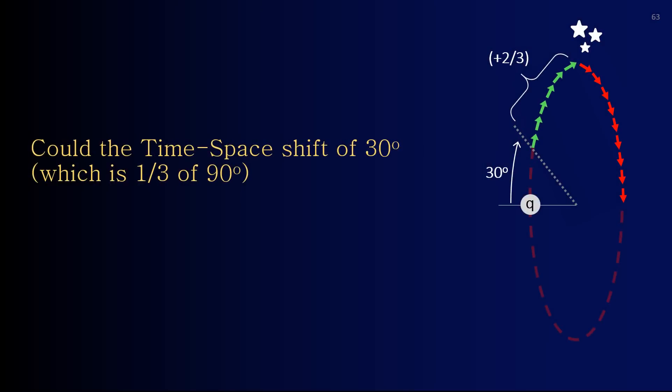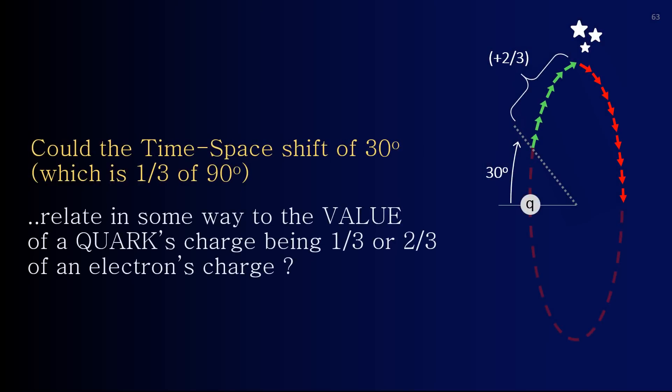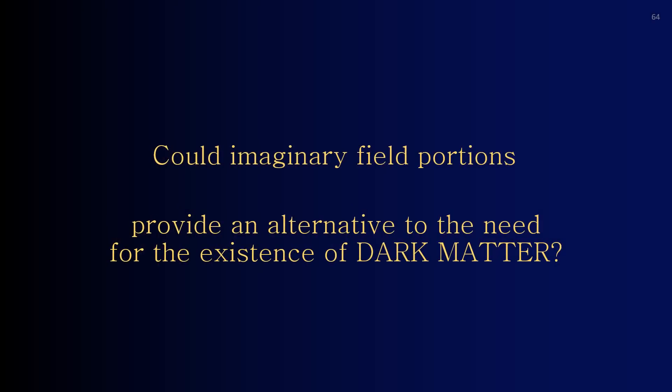Could the time-space shift of 30 degrees, which is one-third of 90 degrees, relate in some way to the value of a quark's charge being one-third or two-thirds of an electron's charge? Could imaginary field portions provide an alternative to the need for the existence of dark matter?